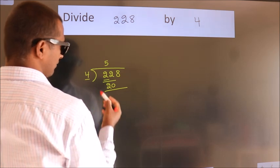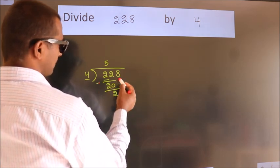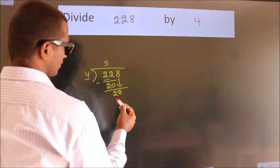Now we should subtract. We get 2. After this, bring down the beside number. So 8 down. So 28.